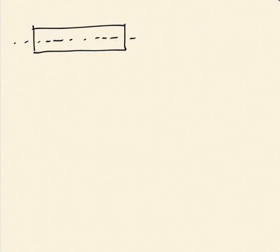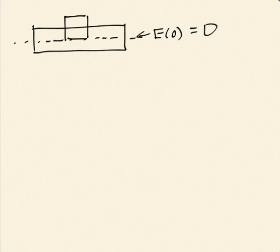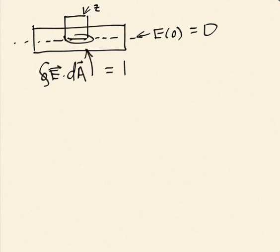We can also use a different pillbox configuration. Since by symmetry the electric field at the center of the slab — call it z equals 0 — must be zero, we choose a pillbox with one side sitting at z equals 0 and the other side at some location z. Because there's no flux through the bottom (field is zero there), the integral of E dot dA for this box is just the electric field at location z times the area of the top.